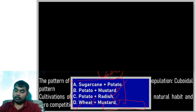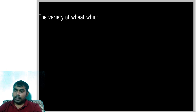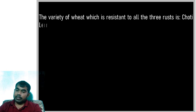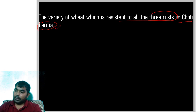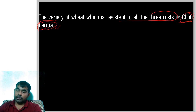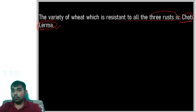The variety of wheat which is resistant to all three rusts is called Chhoati Larma. The Larma variety is resistant to all three types of rust.